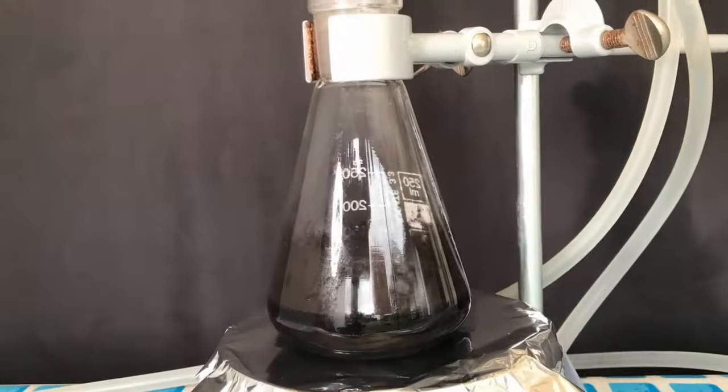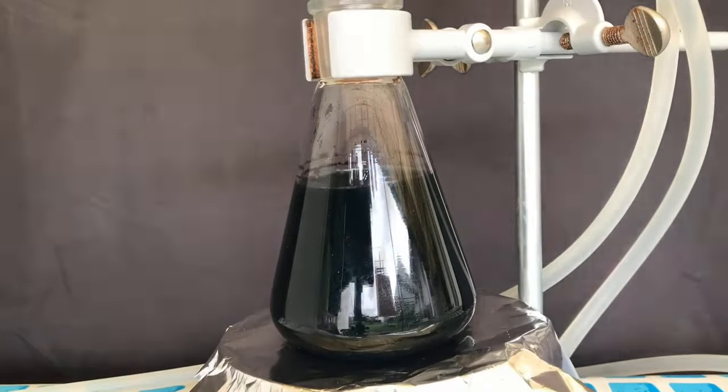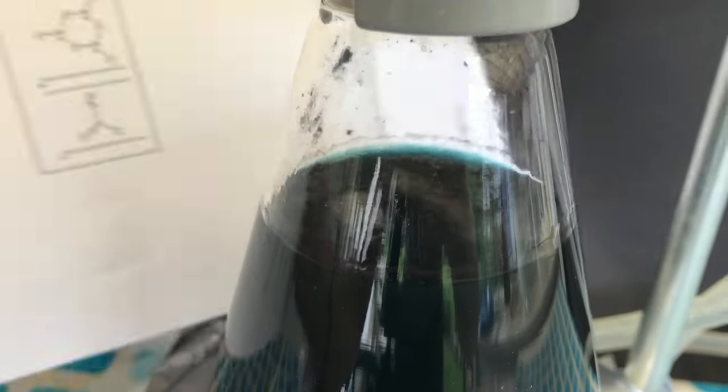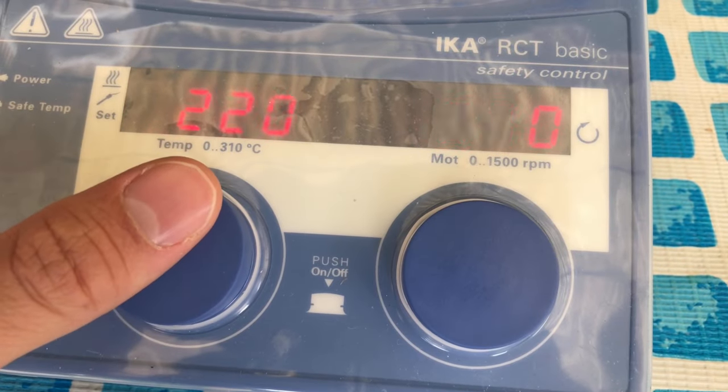We ended up refluxing for 3 hours, adding more distilled water and some more glacial acetic acid, and at the end there was still copper oxide left. If you look closely, the blue color of the copper acetate can still be observed, but we turned off the hot plate and I'm not going to wait any longer.